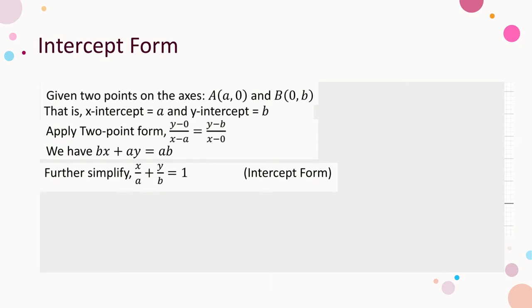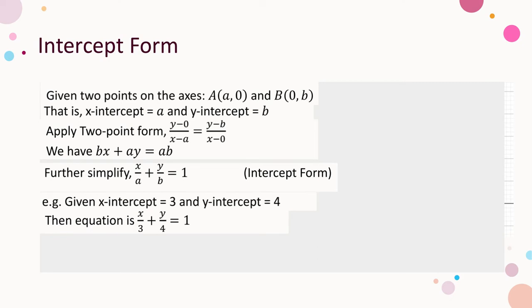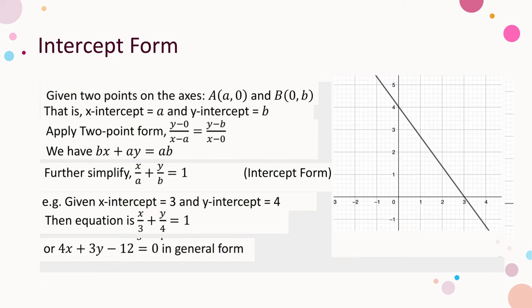For example, if the x-intercept equals 3 and the y-intercept equals 4, the equation of the line is x/3 + y/4 = 1. Of course, we can turn it into the general form: 4x + 3y − 12 = 0. But the intercept form helps us to draw the line in a very easy manner.